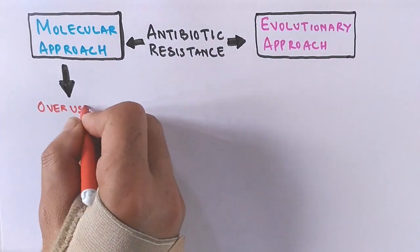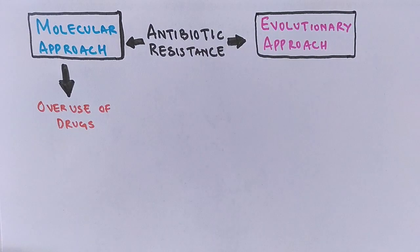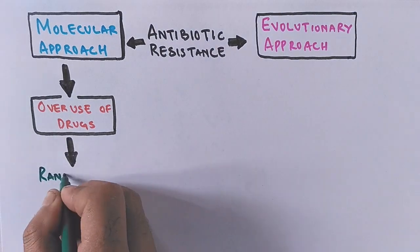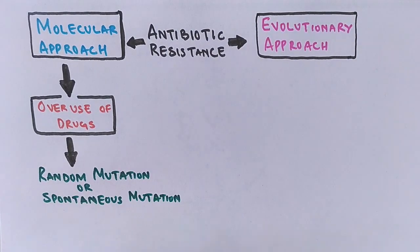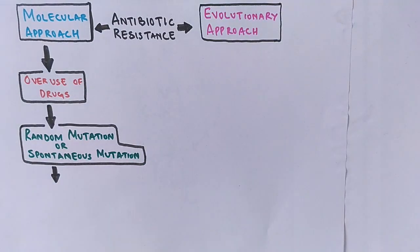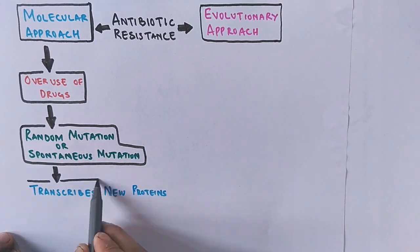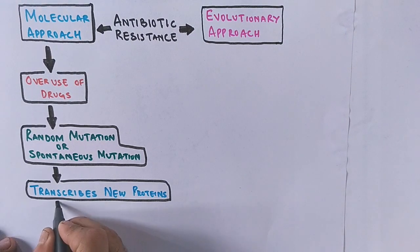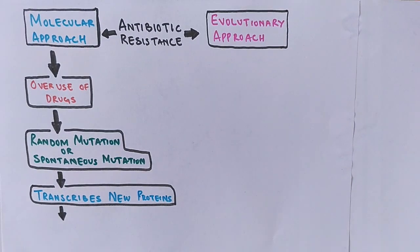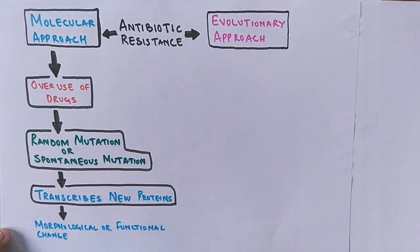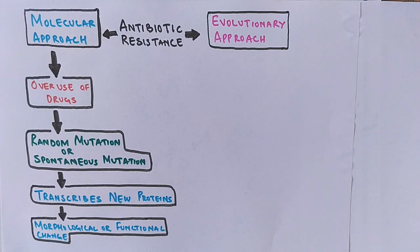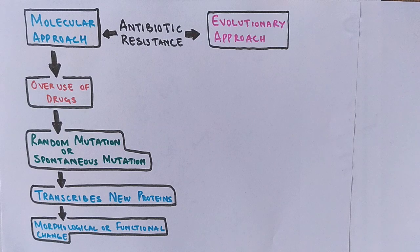In the molecular approach, when there is overuse of drugs, random or spontaneous mutation occurs. Through the central dogma, this mutation leads to the production of new proteins. These new proteins result in a morphological or functional change, expressing new functions that counteract the antibiotics, and this gives rise to resistant bacteria.